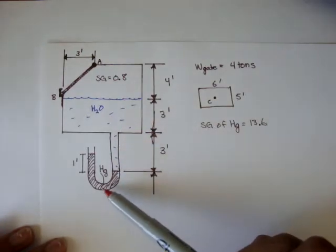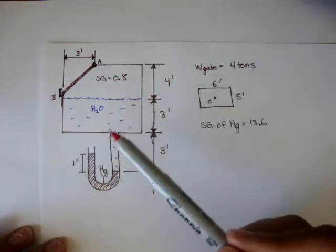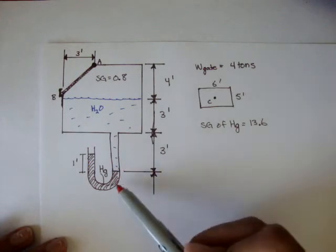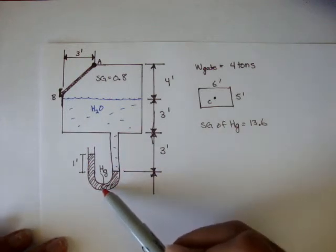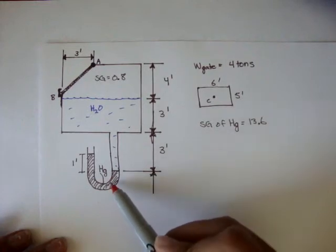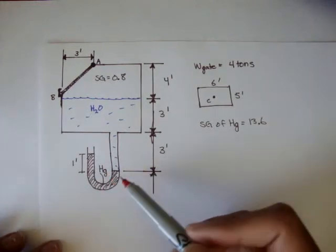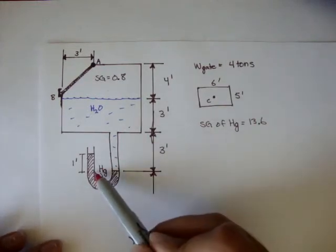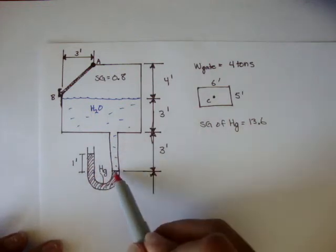The water goes down here to this manometer tube, and it's saying the liquid inside this manometer is mercury, and it's rising one foot above where the water here ends.